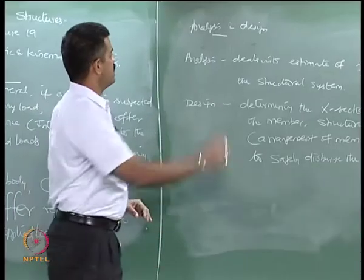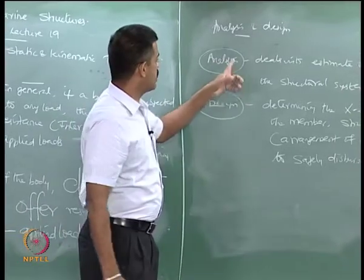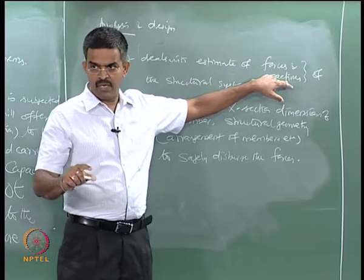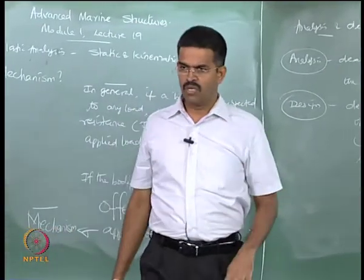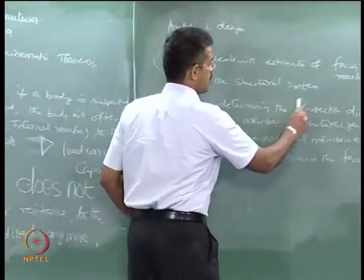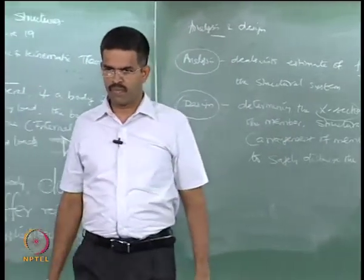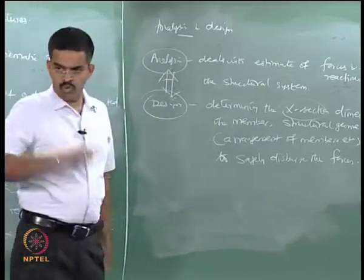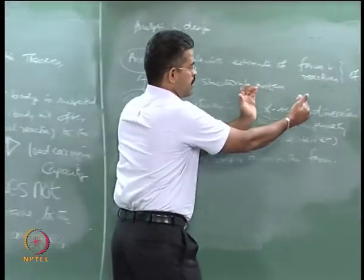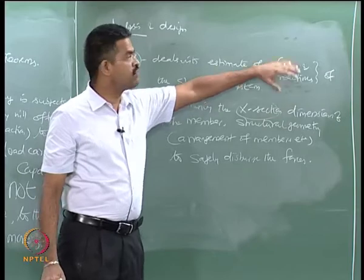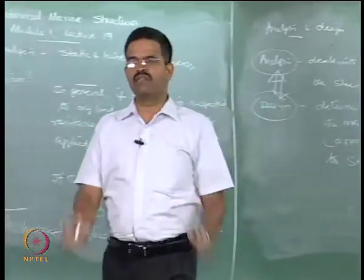In any process, the first step is to do the analysis, and the second step is to do the design. But interestingly, for doing the analysis — since you need to know the reactions offered by the member — you need to know the member dimensions: the area of cross section, moment of inertia, and other geometric characteristics. So if you do not know the cross-sectional dimensions, you cannot find the reaction to the forces on the member. These two are in a closed loop; they are interconnected and cannot be separated. What people generally do is assume certain dimensions, find the reactions, then find the forces, and check whether those dimensions are safe. If not, repeat the process.